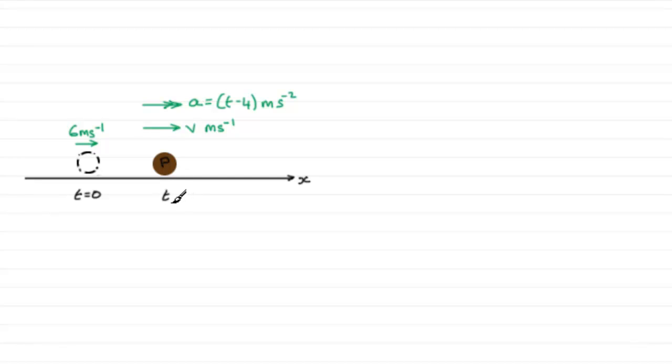We're also told that when t was 0, the particle P was moving with velocity v equal to 6, so it's got to be moving this way because it's in the positive x direction. We've got to find out what v is in terms of t for part a.